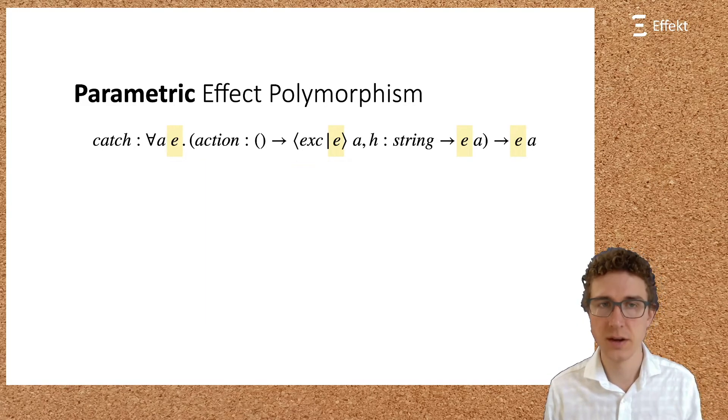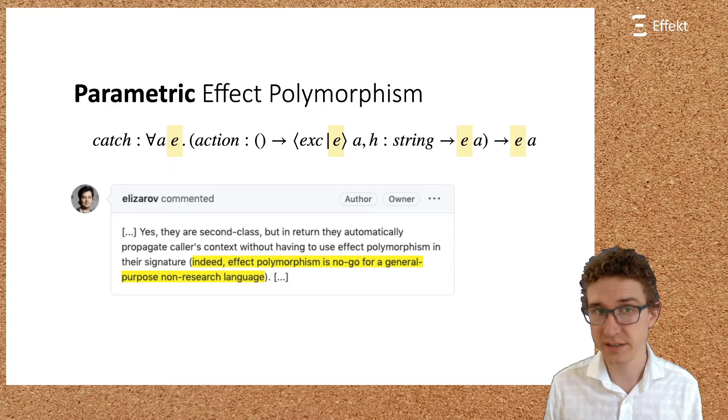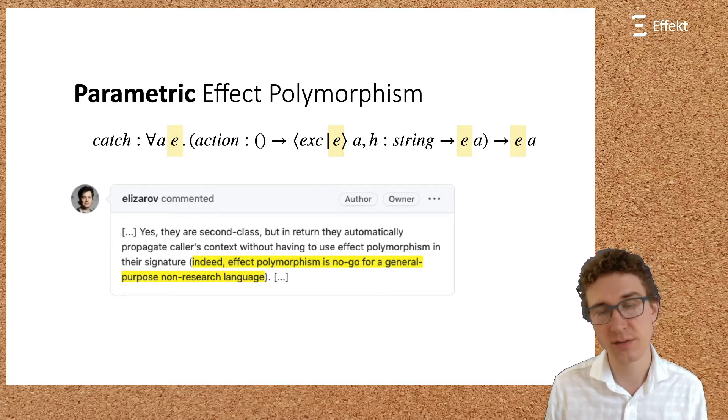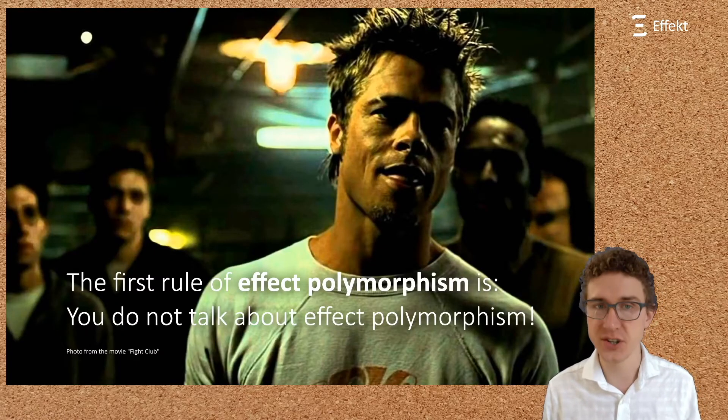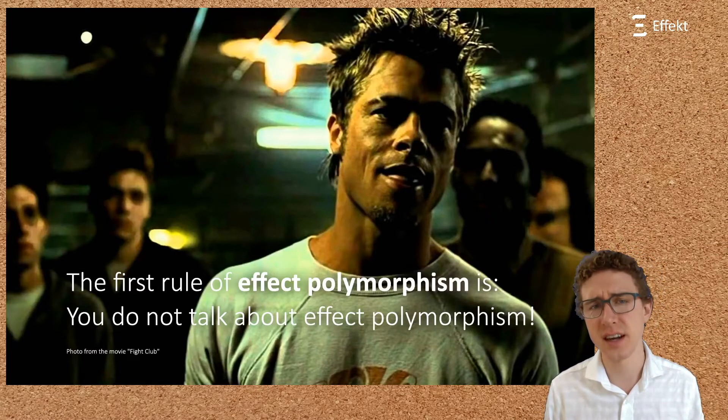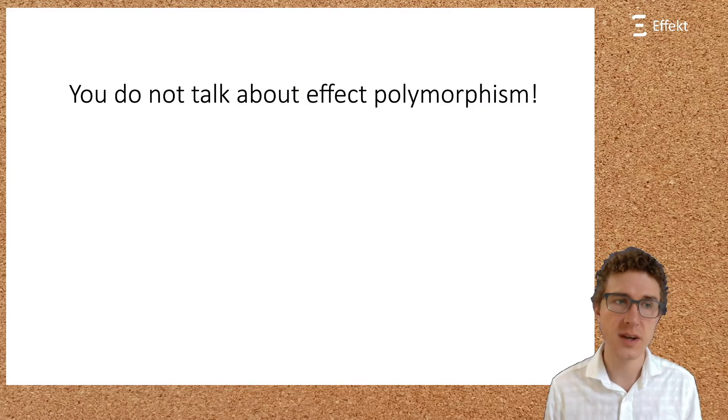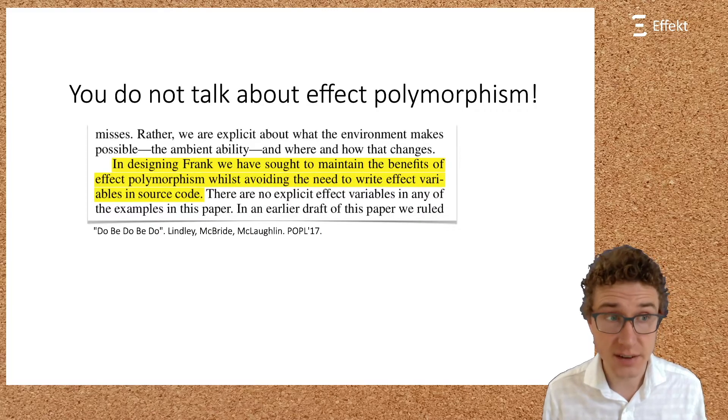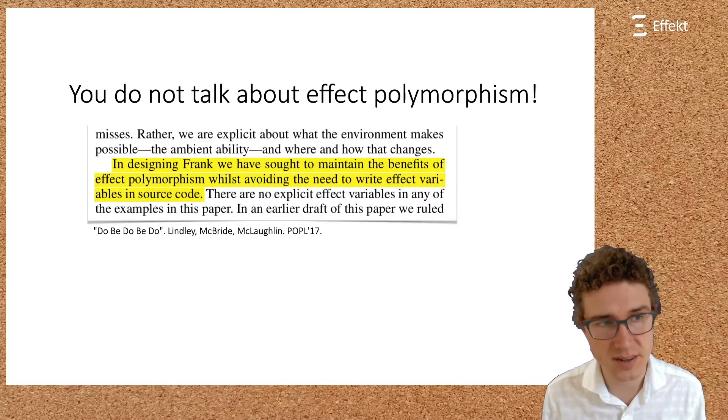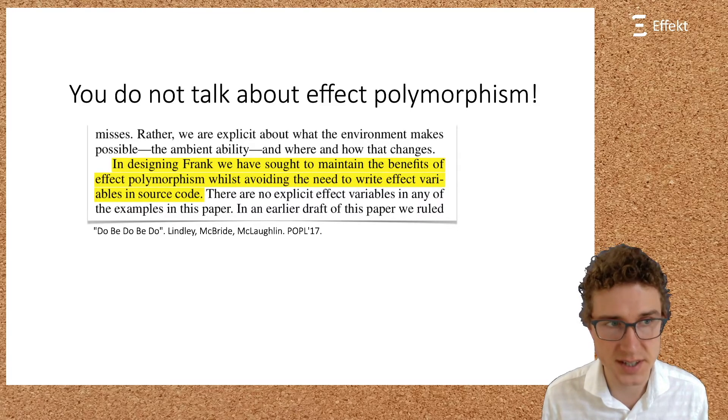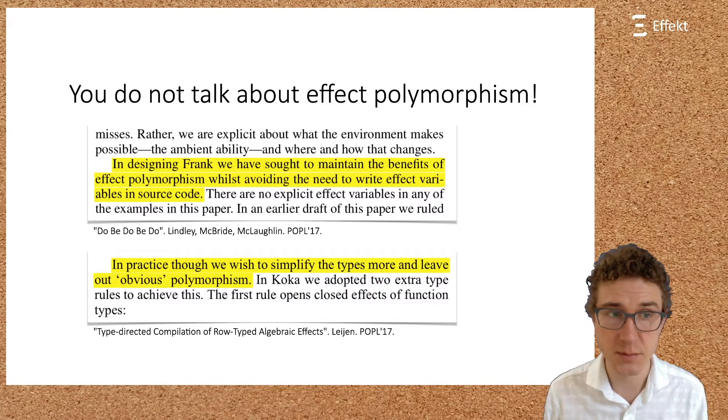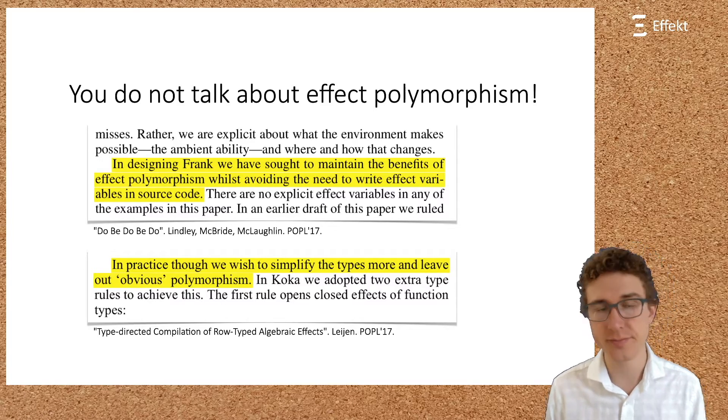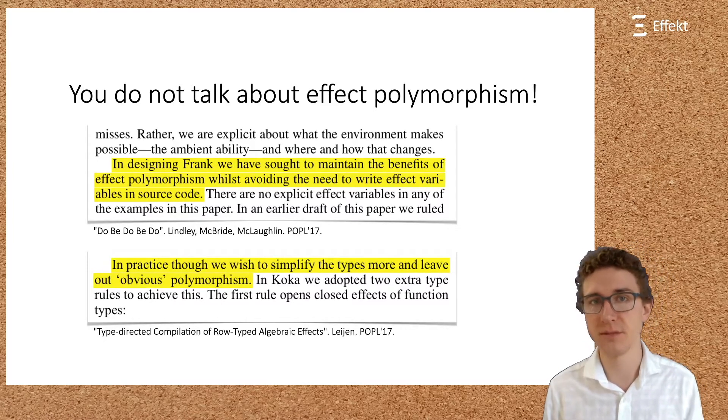We, that is the effect language research team, agree with Roman Elisarov, one of the Kotlin developers, that working programmers should not be confronted with parametric effect polymorphism. And we are in good company with that opinion. Multiple researchers and language designers have stated that surfacing effect polymorphism should be avoided. For example, Lindley states that, in designing FRANK, we have sought to maintain the benefits of effect polymorphism whilst avoiding the need to write effect variables in source code. And similarly, Lyons states that, in practice though, we wish to simplify the types more and leave out obvious polymorphism. And these languages go to great lengths to hide parametric effect polymorphism from the user.